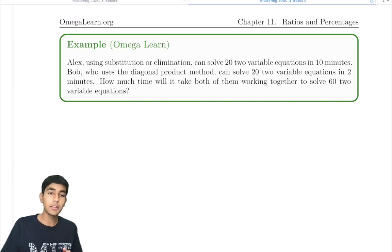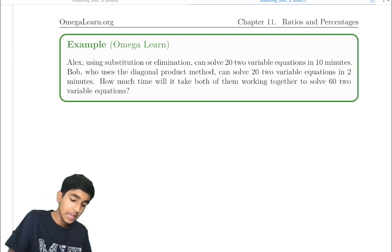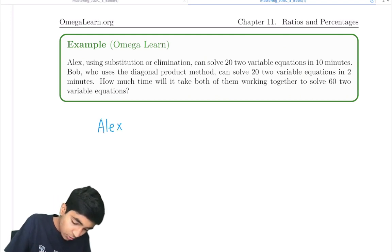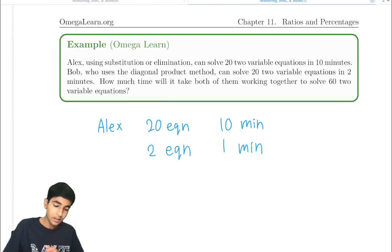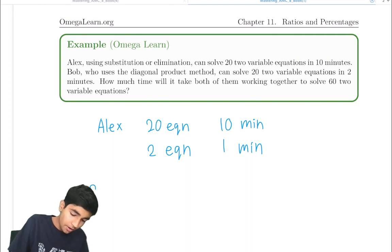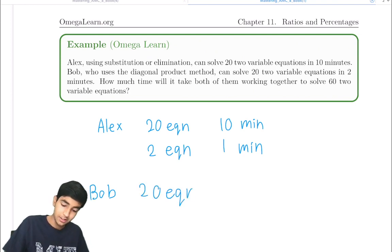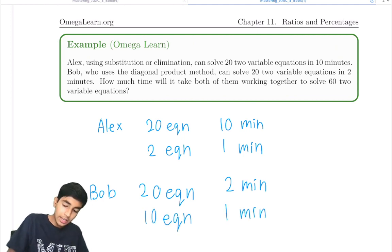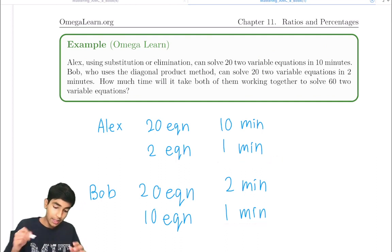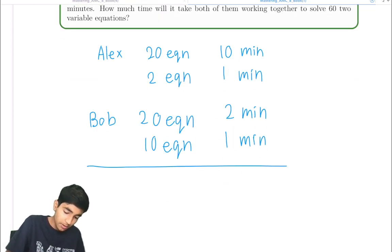For these types of problems, the idea is you want to isolate for a given unit of time. Alex can solve 20 equations in 10 minutes, so in one minute he can solve 2 equations. Bob can solve 20 two-variable equations in 2 minutes using the diagonal product method, so in one minute he can solve 10 equations. Working together in one minute, they can solve 2 plus 10 — 12 equations in one minute.